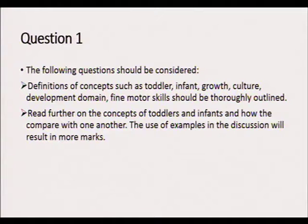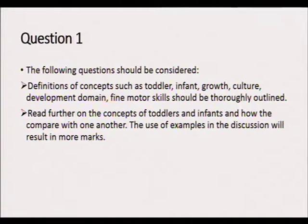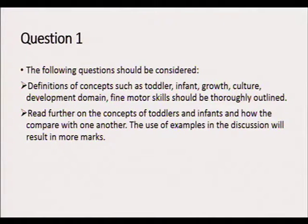Please use your textbooks in these discussions and compare how a toddler differs from an infant. For example, a two-year-old going through the 'terrible twos' is what we call a toddler, while an infant might be six months or three months old. Explain and compare with each other, and use examples — using more examples will earn you more marks.